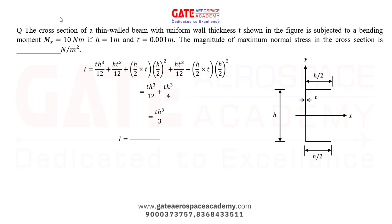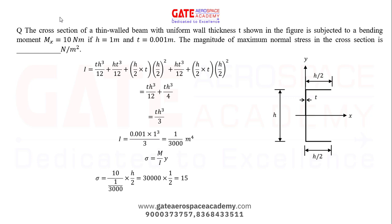Combining terms gives I = th³/3. Substituting values: t = 0.001, h = 1, so I = 1/3000 m⁴. Now applying sigma = M/I × y, we get sigma = 10 ÷ (1/3000) × (h/2) = 10 × 3000 × 0.5 = 15,000 N/m².